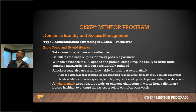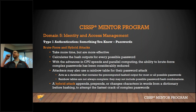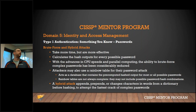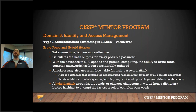Rainbow tables are pre-computed tables of hashed passwords. Instead of running each password through the algorithm in real time, attackers compare your hashes against already-computed hashes and look for matches. It cuts down attack time significantly. Rainbow tables don't include every possible password-hash combination, but you only need one hit to get into a network.